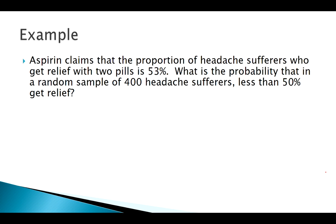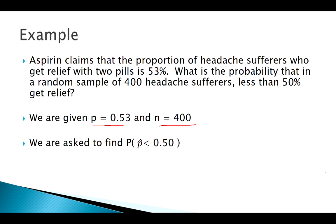So in this example, we've got a claim from the manufacturer of this aspirin that 53% of people who take two pills should feel better. We're taking a large sample of 400 with the probability that less than half of them get relief. So we're assuming that p is 0.53 and n is 400. What are we looking for? Probability of p-hat being less than 0.5.